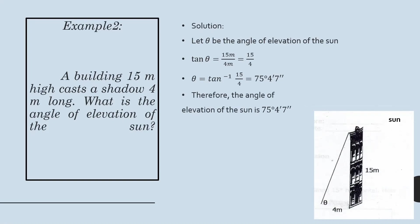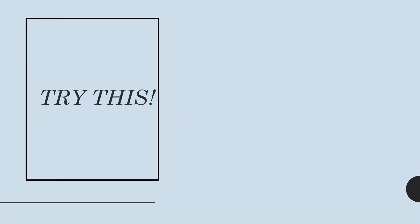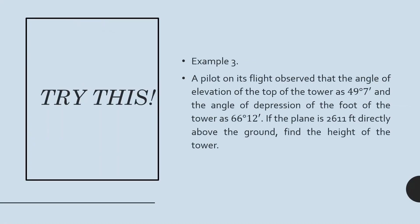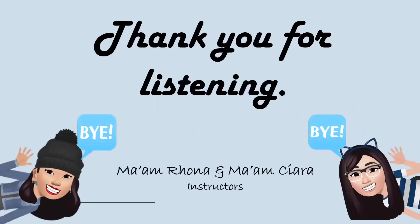If you notice, we applied the process from the previous lesson, which is the solution of right triangles. Please try this example: a pilot in flight observed the angle of elevation of the top of a tower as 49 degrees 7 minutes, and the angle of depression of the foot of the tower as 66 degrees 12 minutes. If the plane is 2,611 feet directly above the ground, find the height of the tower. To properly understand it, you have to illustrate it. Thank you for listening and we hope that you learned.